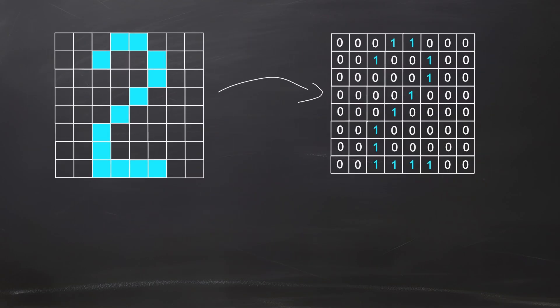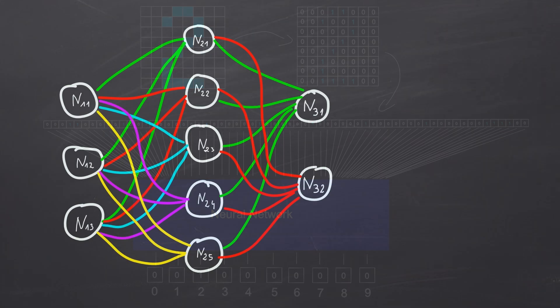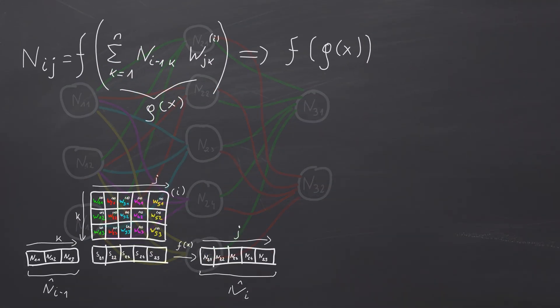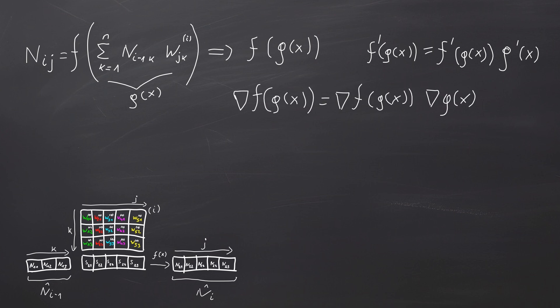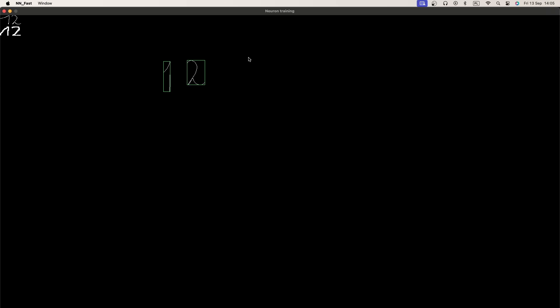After watching this video, you will learn how to create OCR that detects characters while typing. We'll start by implementing a dense neural network with backpropagation algorithm to train it. Then we put this network to work, accurately identifying characters. To make it interactive, we'll also create a simple window where you can draw characters, instantly connecting your input to OCR for real-time recognition.